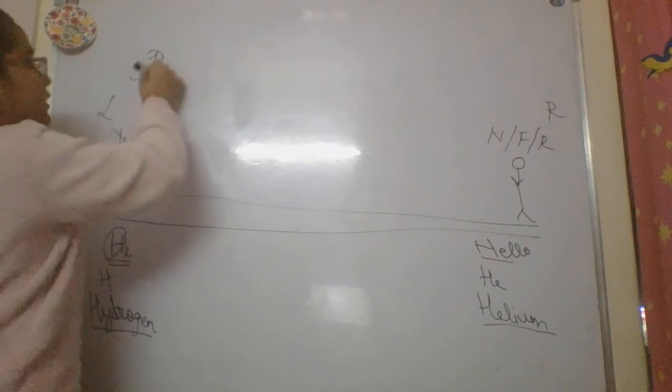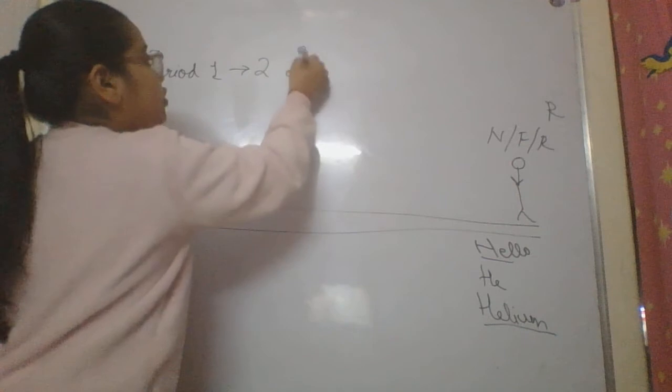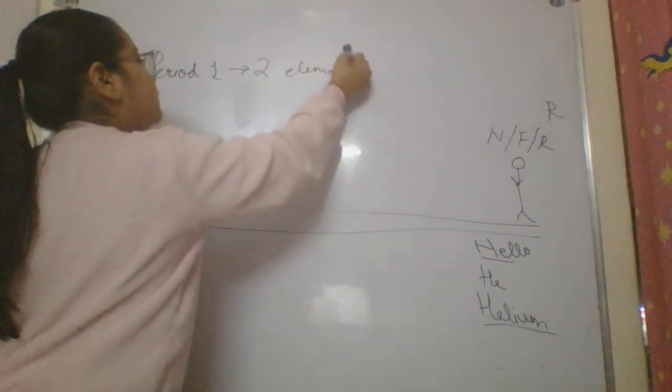Answer is period one is the shortest period with two elements.